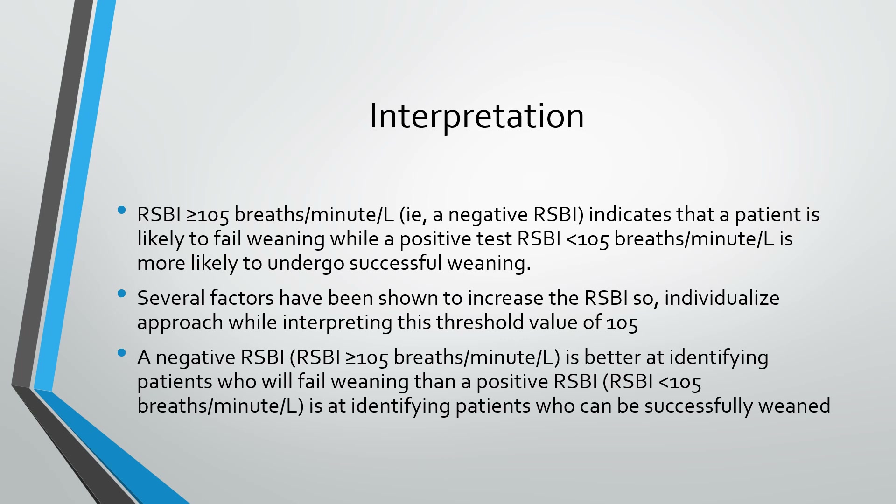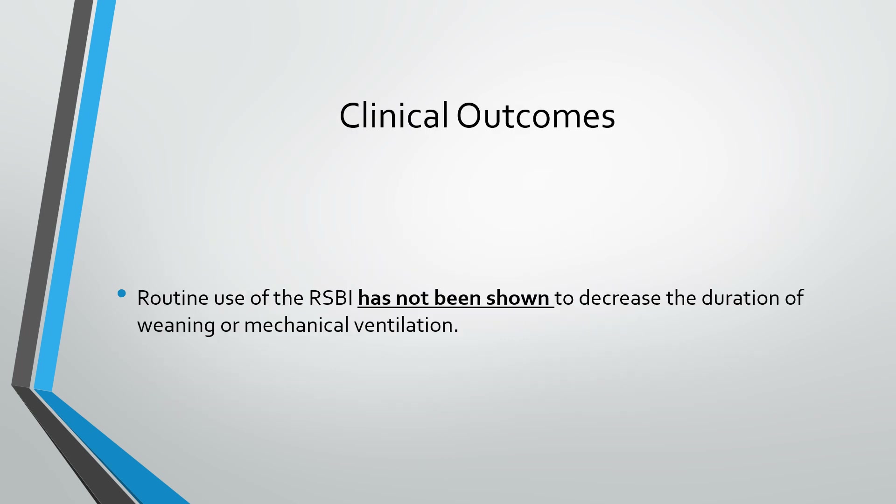Evidence suggests that a negative RSBI — that is, RSBI equal to or more than 105 breaths per minute per liter — is better at identifying patients who will fail weaning than a positive RSBI is at identifying patients who can be successfully weaned. In terms of clinical outcomes, the routine use of RSBI has not been shown to decrease the duration of weaning or mechanical ventilation. So its use should be restricted to those patients where doubt exists over tolerance to weaning.